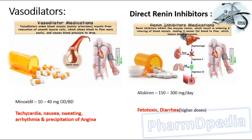Direct renin inhibitors — renin inhibition leads to widening of blood vessels, making it easier for blood to flow. Example: aliskiren, 150 to 300 mg per day. These are fetotoxic and cause diarrhea in higher doses.